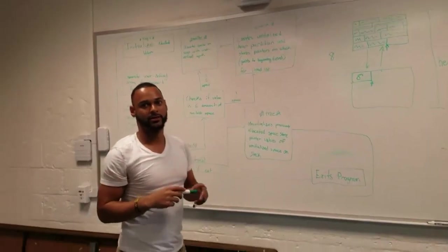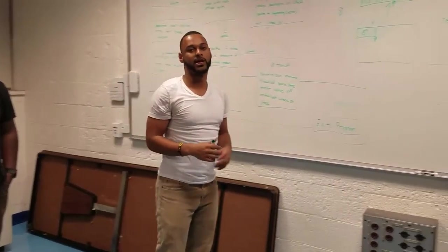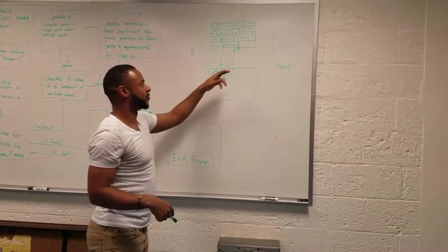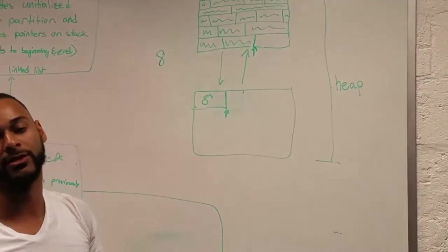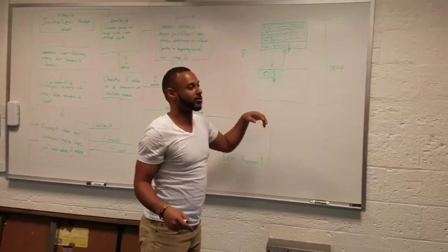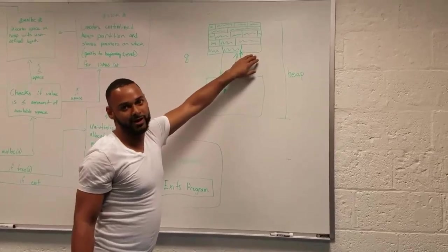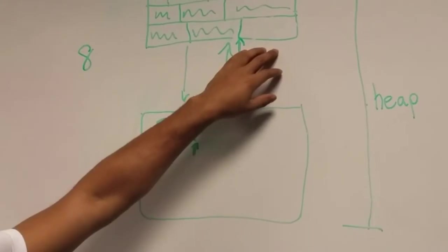And both of those pointer bytes are going to get moved to the stack, so that if at a later time, we had the user input a value that could go there, because we're utilizing a first-fit algorithm, this is the value that's going to get looked to be allocated first.